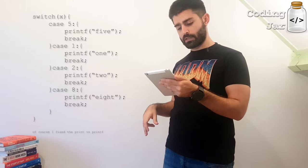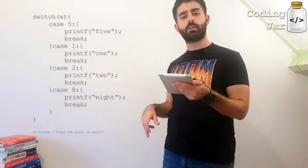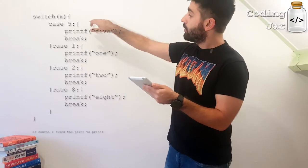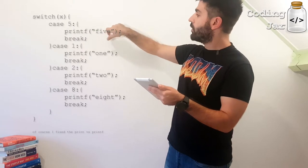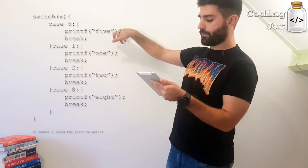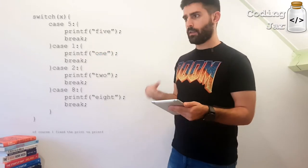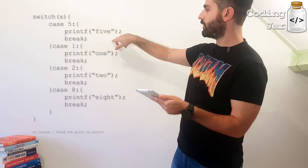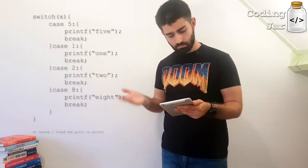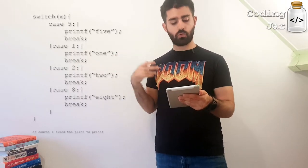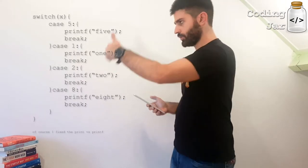So we have case 5, colon, block of code to be executed, printf, oh I've made a mistake here in my slides. It says printf instead of printf. So case 5, colon, printf 5, break. Exactly underneath that, case 1, printf 1, break. Case 2, printf 2, break. And so on. And we close the curly brackets.